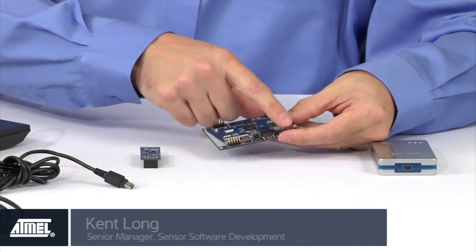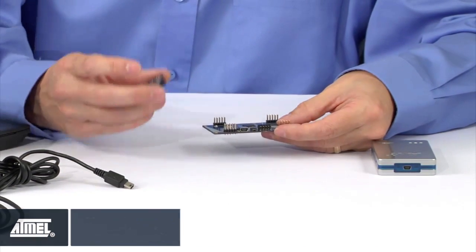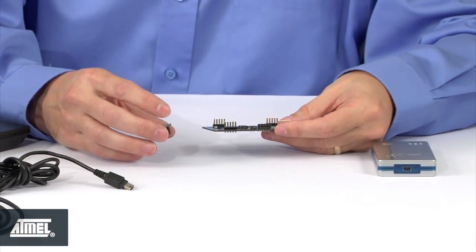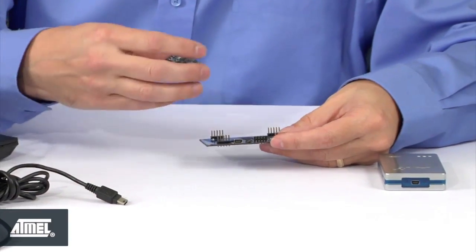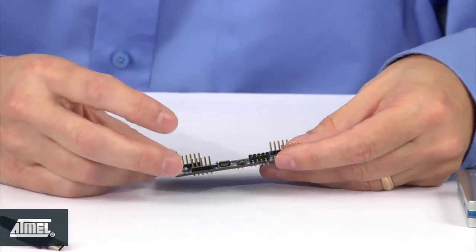We'll start with the UC3 board. It has these headers on it which bring out all the signals that are required by the sensor board. Those include both power and ground as well as interrupts and the I2C or TWI connection that the sensor board uses.